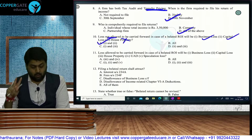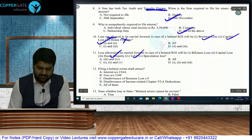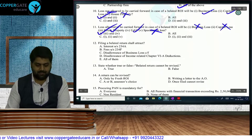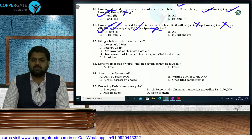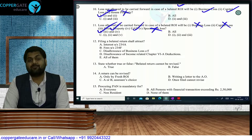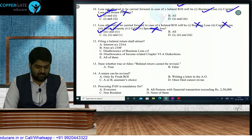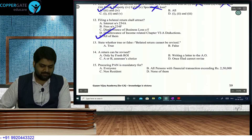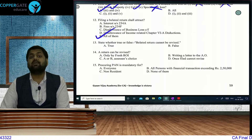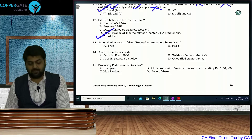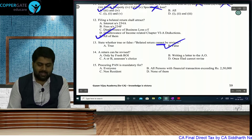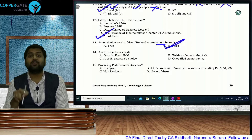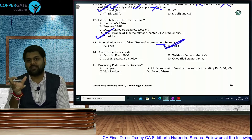Loss allowed in case of belated ROI: house property and unabsorbed depreciation only. Filing a belated return attracts: interest under 234A at 1% per month, fees under 234F of Rs. 1,000/5,000/10,000, disallowance of business loss, and disallowance of income-related deductions. Question on belated return: 'a belated return cannot be revised' — this statement is FALSE, because both original and belated returns can be revised.